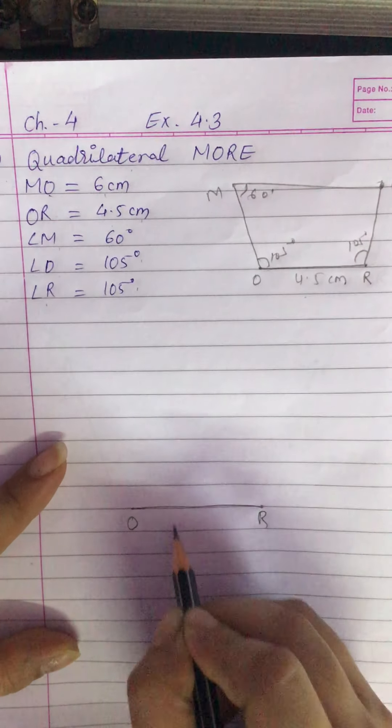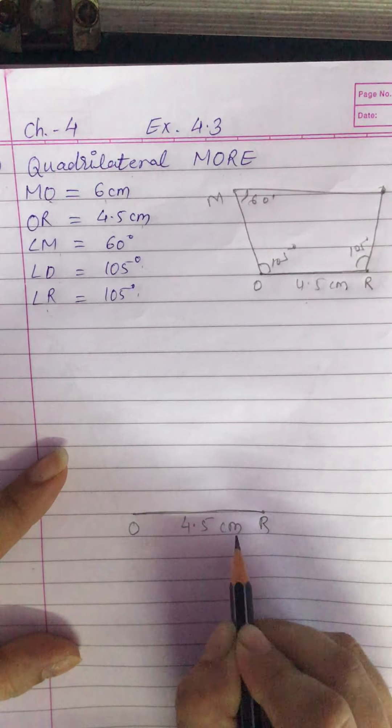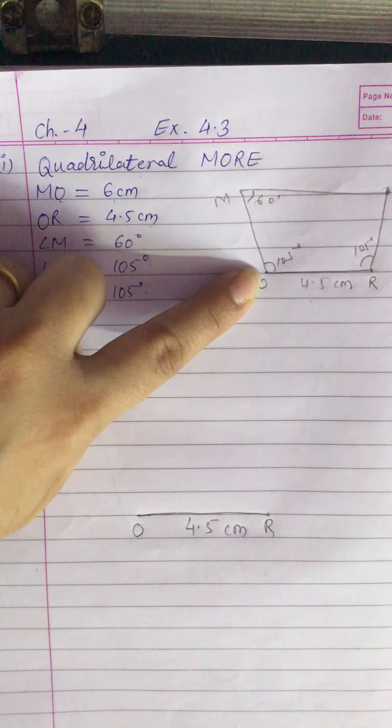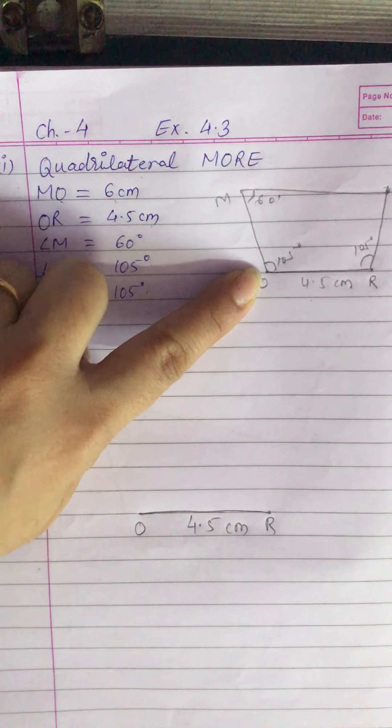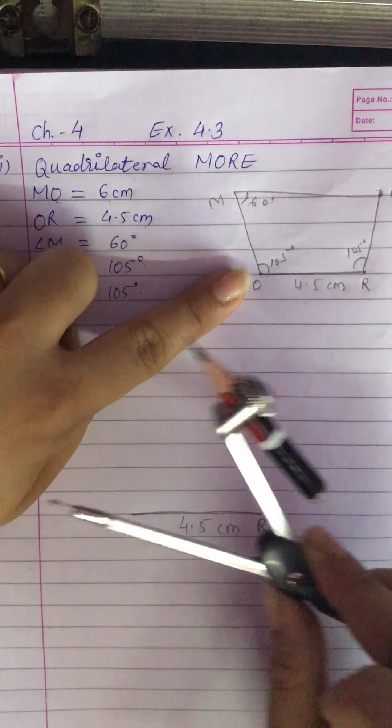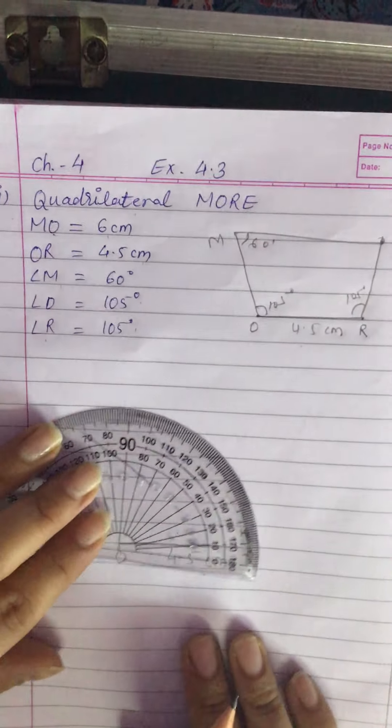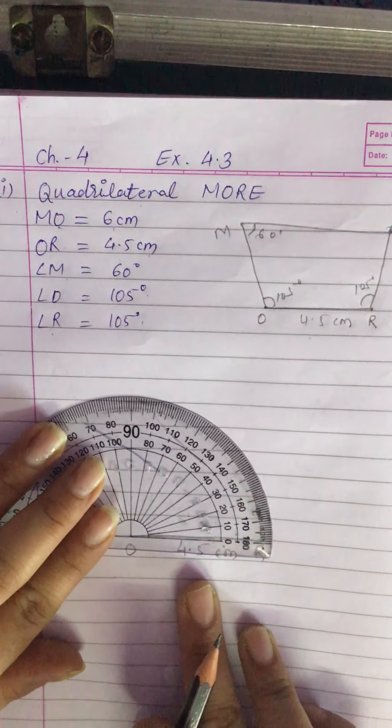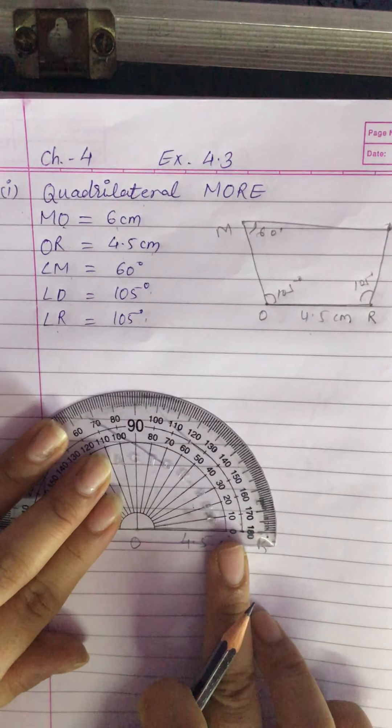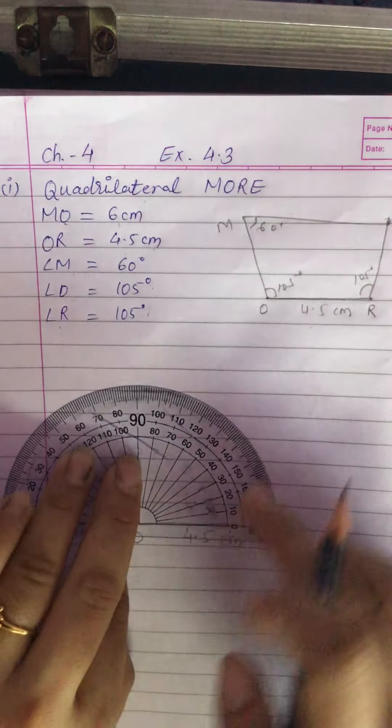OR 4.5 cm. Now at O we have to draw a 105 degree angle. We can draw with the help of a compass or protractor. Here I am using a protractor. Put the pointer on O and draw an angle of 105 degrees.